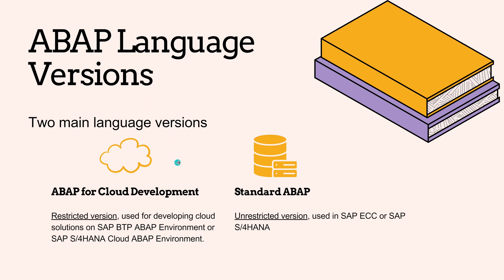Access to other repository objects is restricted by released APIs. The second is Standard ABAP, an unrestricted version used in SAP ECC or SAP S/4HANA. It covers the entire ABAP Language scope.